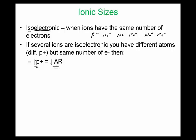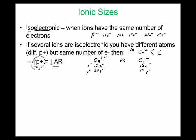For example, if I have calcium with a two-plus charge versus a chloride ion with a one-minus charge, both of these have eighteen electrons. The one with the smaller radius will be the one with more protons. Calcium has twenty protons and the chloride ion has seventeen protons, so calcium will have the smaller radius — calcium is smaller than the chloride ion.